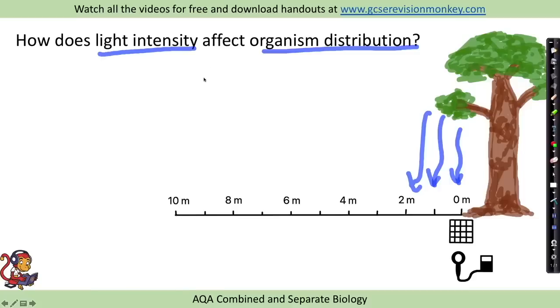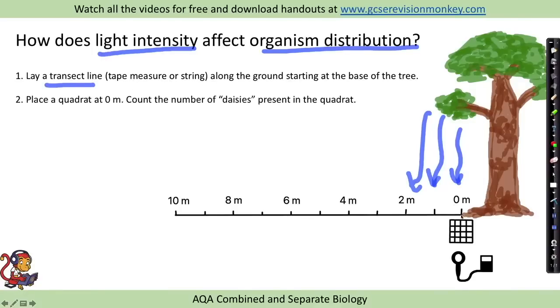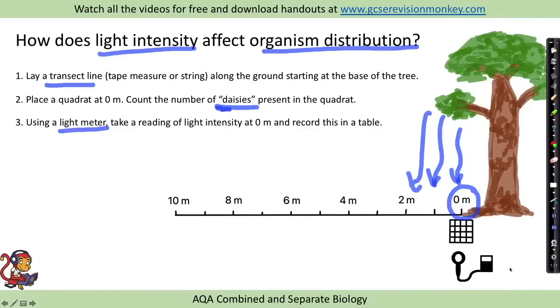We can sample the organisms at regular intervals and see how the light intensity affects their distribution. We'd lay a transect line - this could be a tape measure or some string - along the ground starting at the base of the tree. We would place a quadrat at the zero meters mark and count the number of organisms, for example daisies, present in the quadrat. We would use a light meter to take a recording of the light intensity and record this in a table.